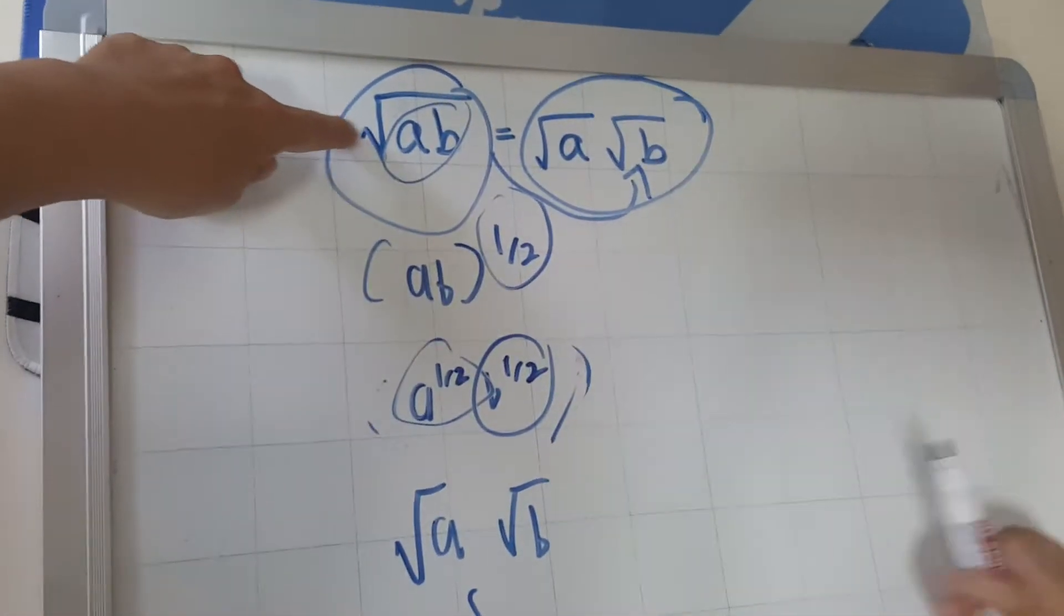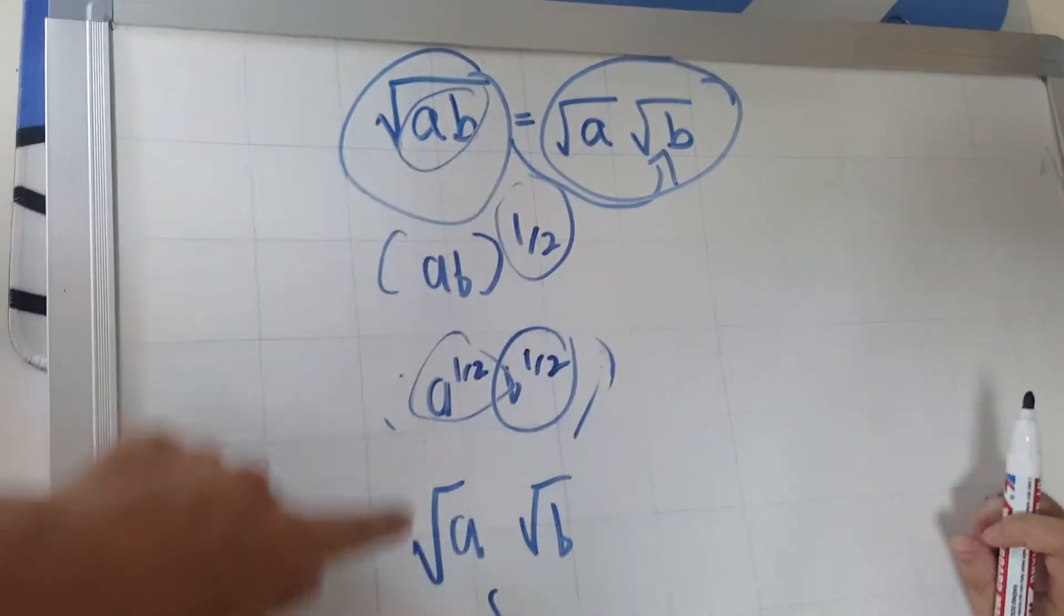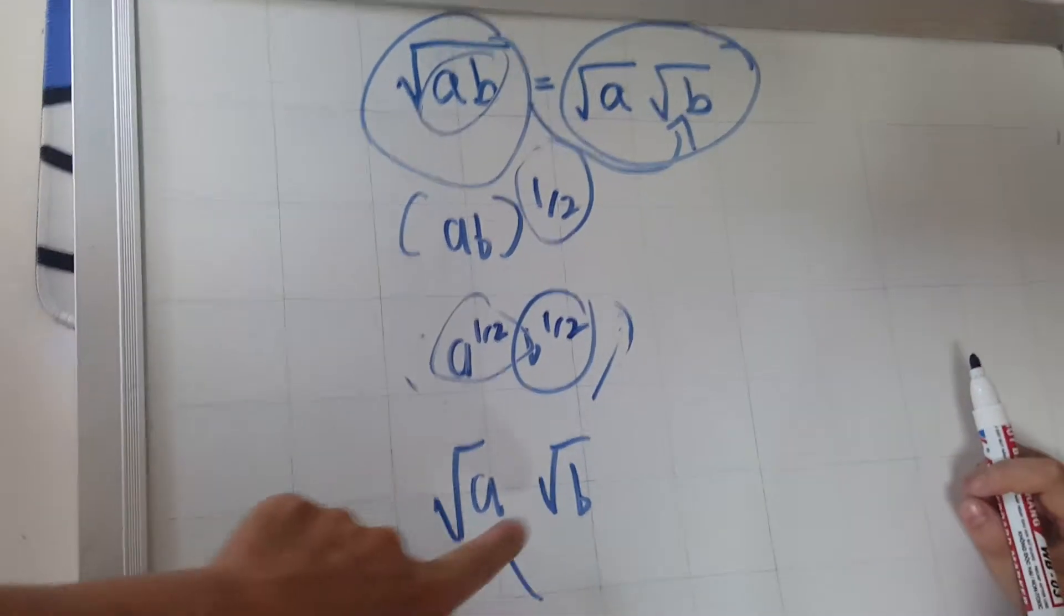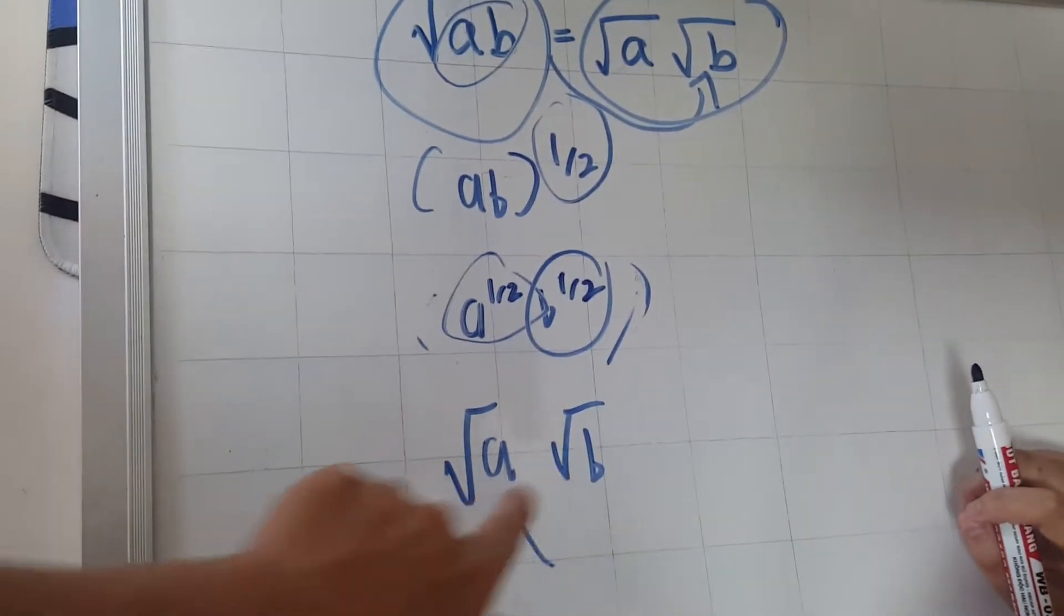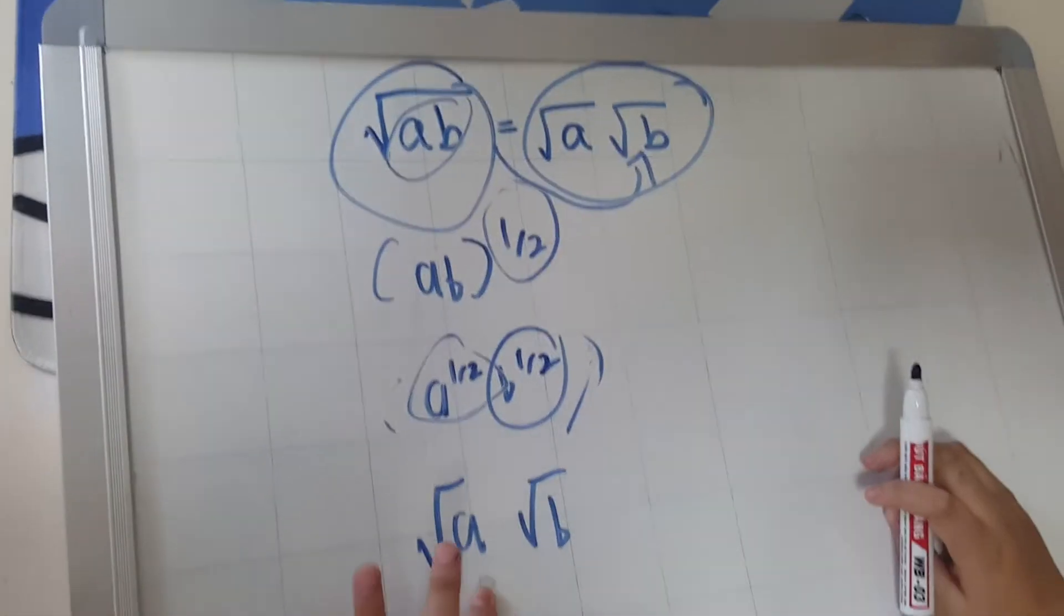So square root of one thing times another thing is the same as you taking the square root of one thing, taking the square root of the other thing and then multiplying them together. Thanks for that, Ethan.